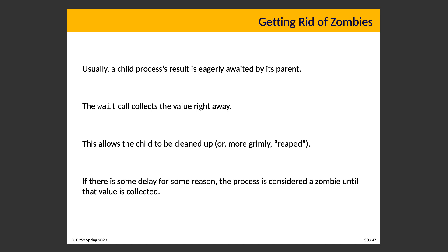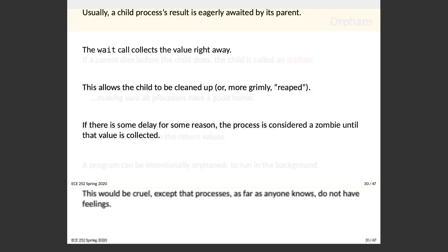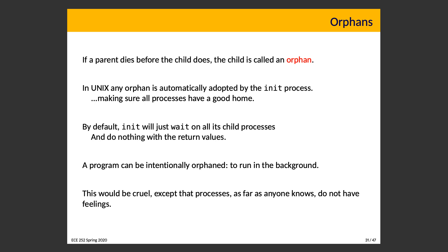If the delay in collecting is significant, the process is a zombie for some amount of time. Seeing a zombie process in the list isn't necessarily bad — it just means it has finished and hasn't yet been collected, which should happen sooner or later. If it doesn't happen for a long time, that's concerning. If a parent process dies before the child does, the child process is called an orphan. In Unix, any orphan process is automatically adopted by init or systemd, which collects return values from child processes, allowing them to be cleaned up. You can also intentionally orphan a program to allow it to run in the background.